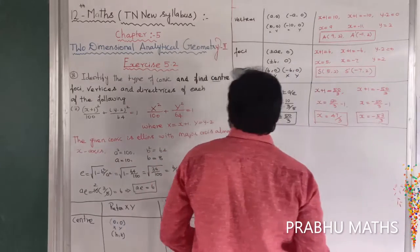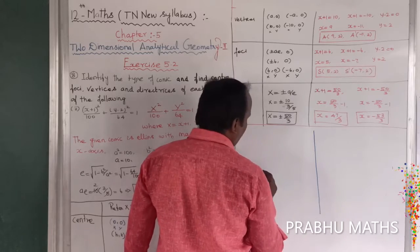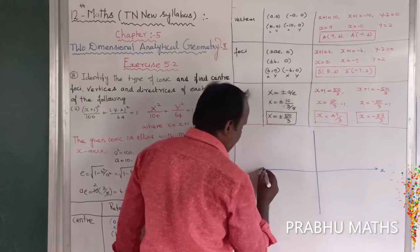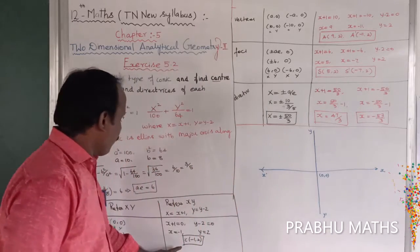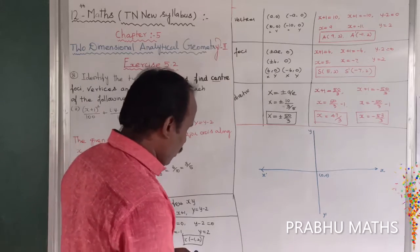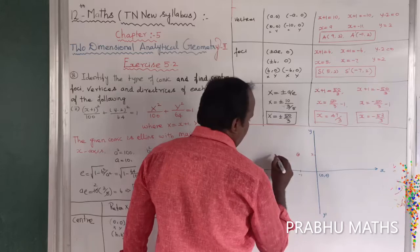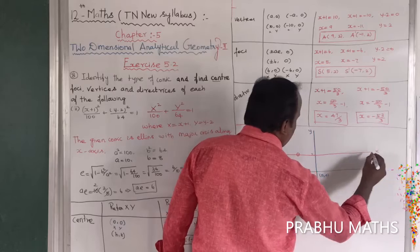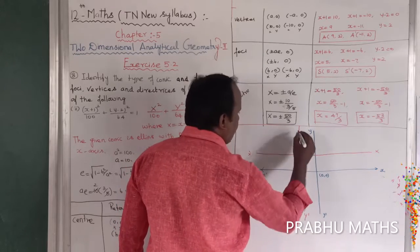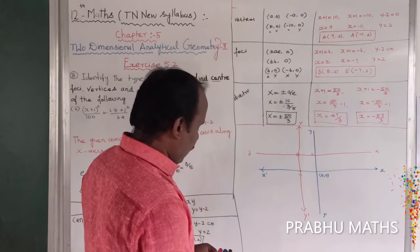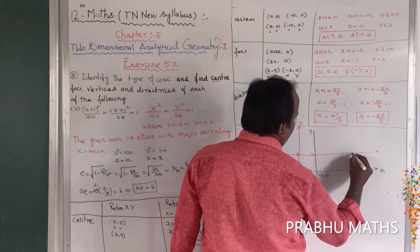Now the diagram: draw the Y-axis, X-axis, X', Y' axes with origin (0, 0). Center is at (-1, 2). The translated axes are capital X (X-dash) and capital Y (Y-dash). Plot vertices: 9 comma 2 is the A value, and -11 comma 2 is the A' value. The ellipse is formed by these points.